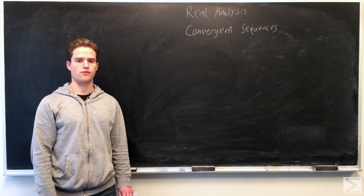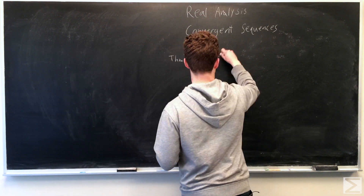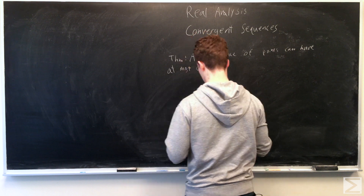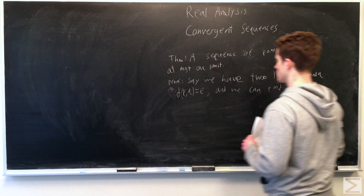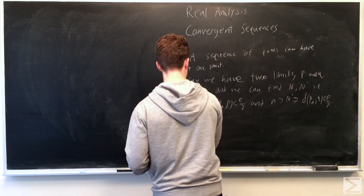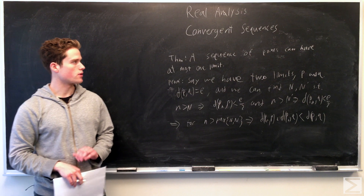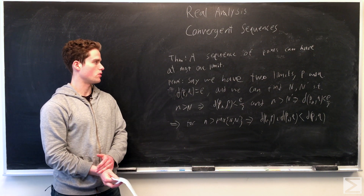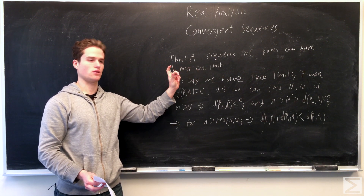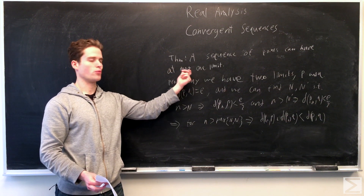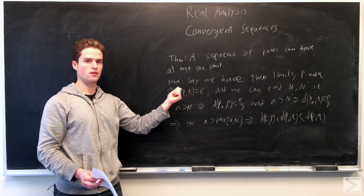Something we can prove is that every converging sequence has at most one limit. We can prove a sequence of points in a metric space can have at most one limit. The intuition behind this is: if we had two limits some distance apart, then in Euclidean space, having more than one limit would imply we have a sequence getting infinitesimally close to two different points, which seems absurd.